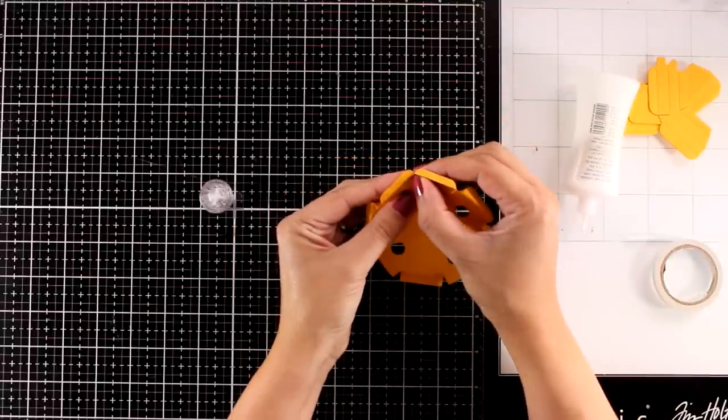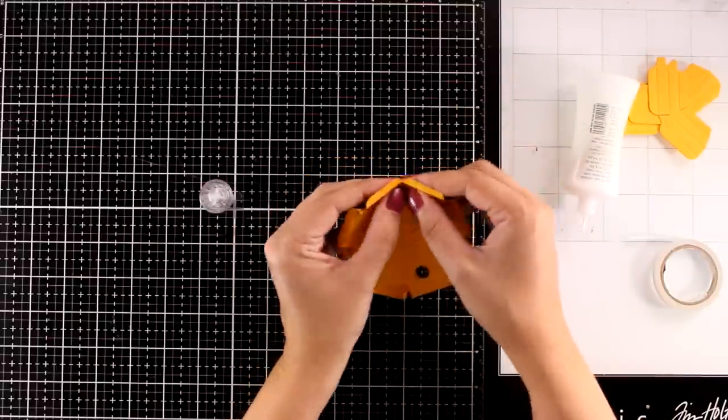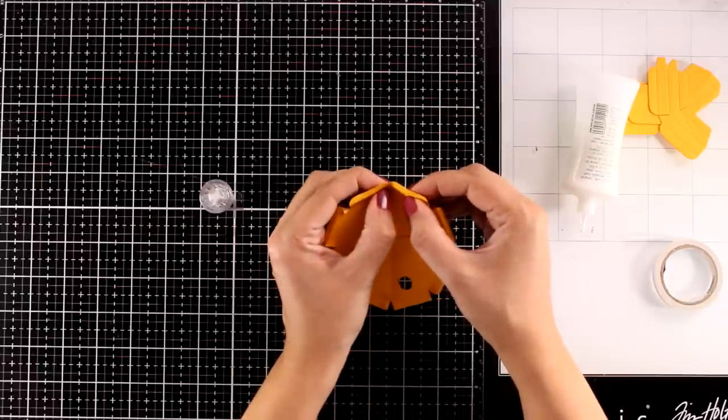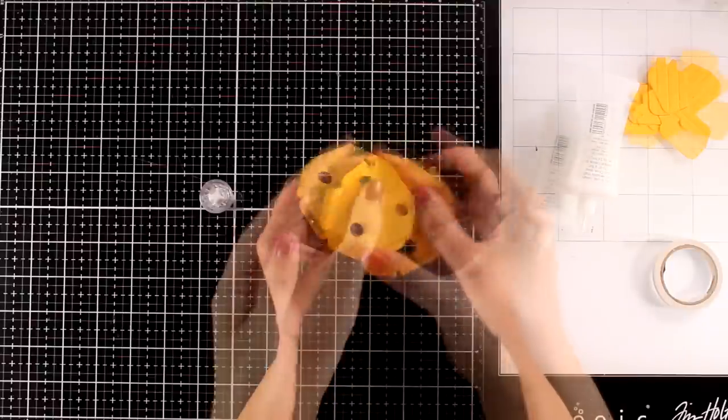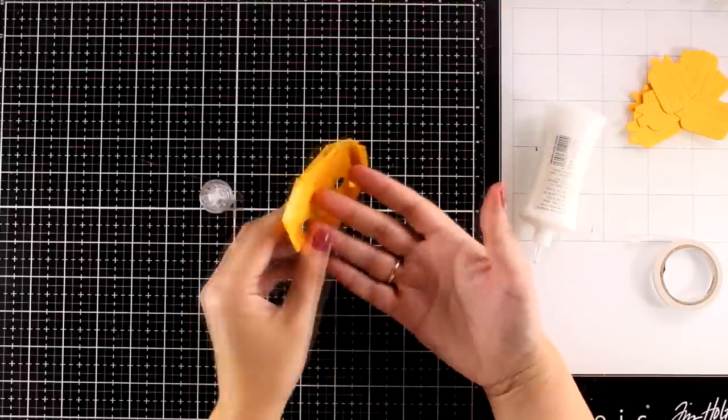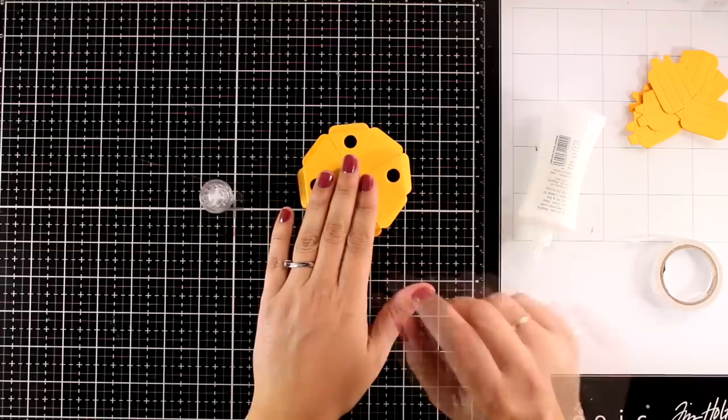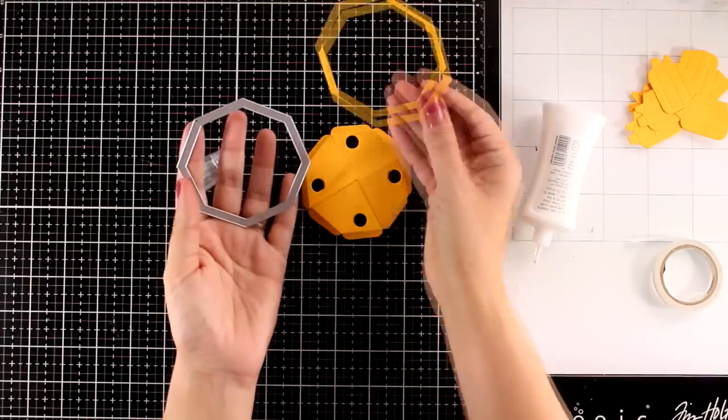Now if you notice there are tiny little tabs in between those. So I'm going to add a dot of glue and hold them with my fingers. Here is how this is going to end up looking and make sure that the bottom tabs are turned towards the outside.